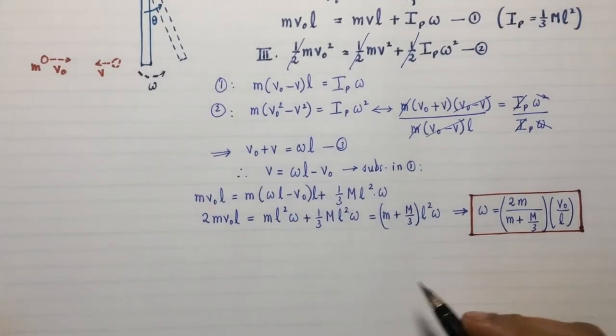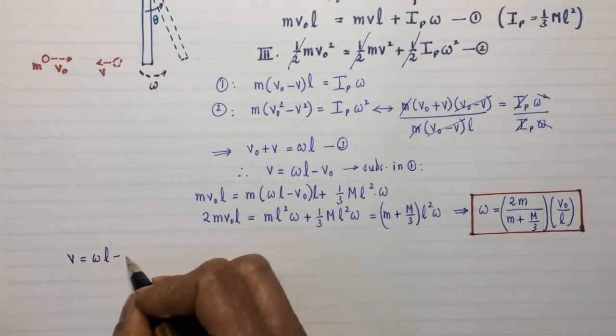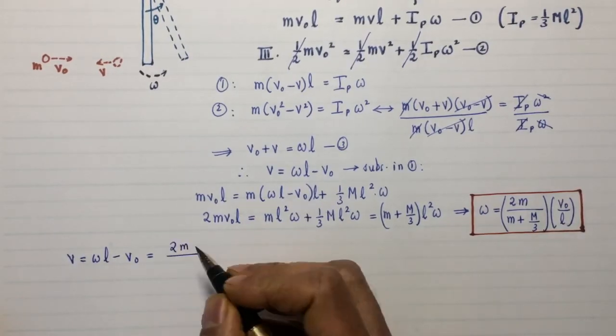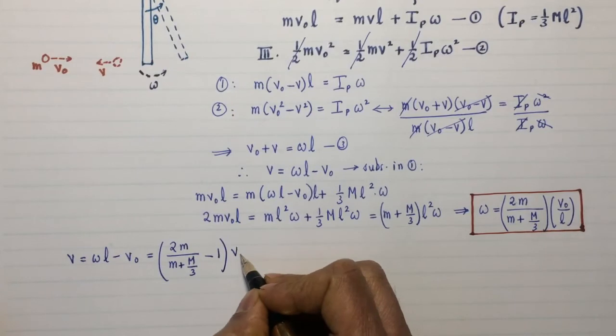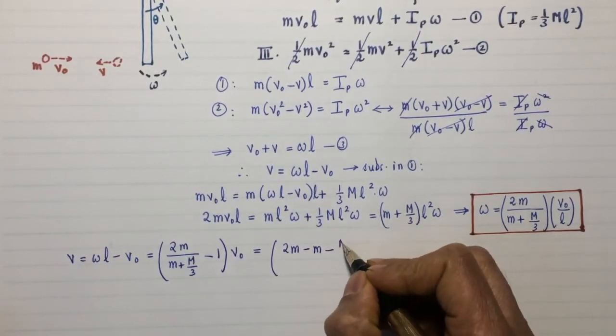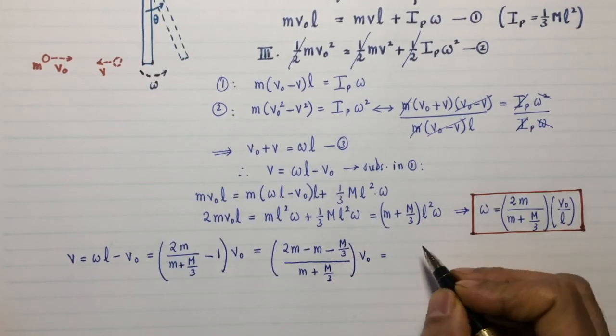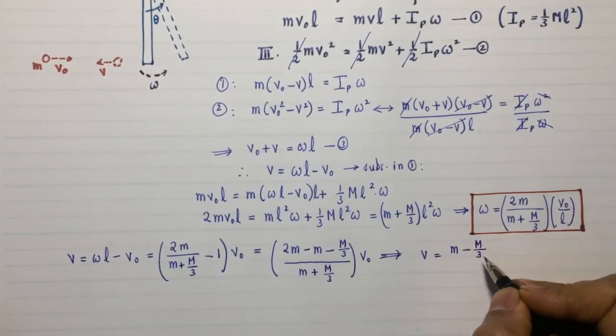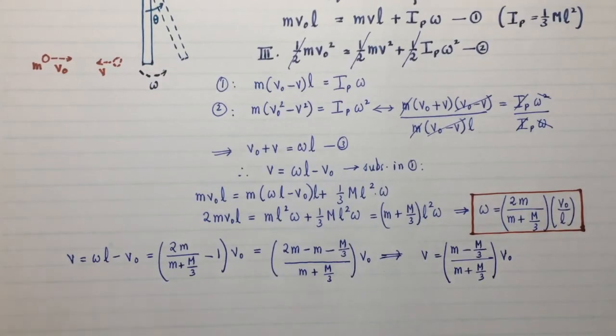To find the details of the ball are pretty easy. Just substitute this omega back: V = ωL - V0. Multiplying omega by L gets rid of the L in the denominator: V = (2M/(M + M/3) - 1)V0. Doing the common denominator: (2M - M - M/3)/(M + M/3)·V0 = (M - M/3)/(M + M/3)·V0. It's a really nice looking expression with very nice symmetry to it.